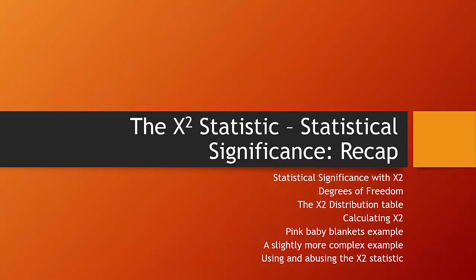To recap, we've covered statistical significance with the chi-square statistic, degrees of freedom, the chi-square distribution table, and calculating the chi-square distribution with a couple of examples. We've also done some thinking about using and abusing the chi-square statistic. This is a fantastic way to get your head around what statistical significance is actually doing and what it means to make a probability claim about rejecting the null hypothesis and the risk of making a type 1 error.